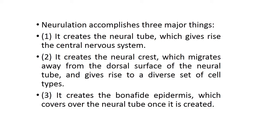Frog Neurulation accomplishes three major things. It creates a neural tube which gives rise to the central nervous system. It creates the neural crest which migrates away from the dorsal surface of the neural tube and gives rise to a diverse set of cell types. And it creates the bona fide epidermis which covers the neural tube once it is formed.